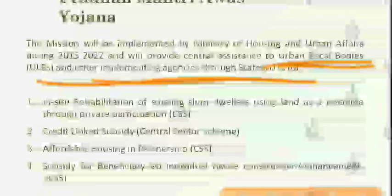Under Pradhan Mantri Awas Yojana, there are different sub-schemes: rehabilitation of existing slum dwellers is under the centrally sponsored scheme; credit-linked subsidy — where the government provides subsidy to persons taking credit to build their own house — comes under the central sector scheme; affordable housing in partnership, where the government makes flats in partnership with private enterprises and sells them to the urban poor at a minimal amount, is a centrally sponsored scheme; and subsidy for beneficiary-led individual house construction and enhancement is also a centrally sponsored scheme.